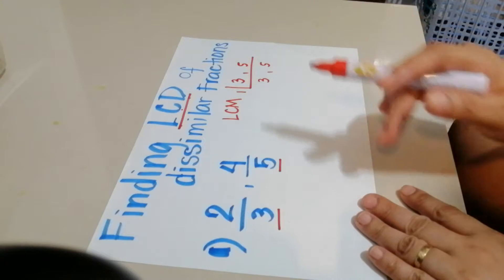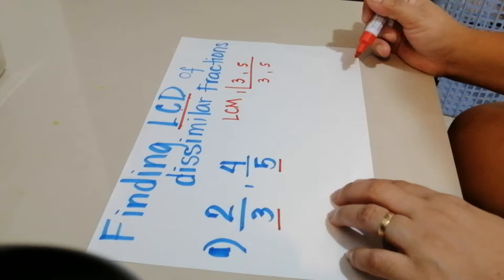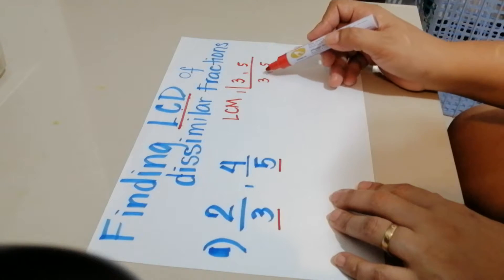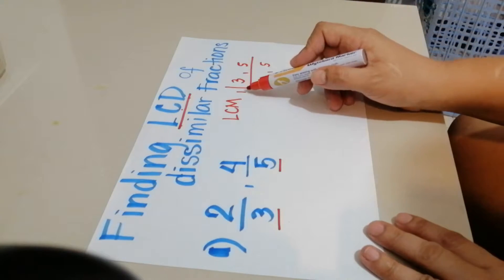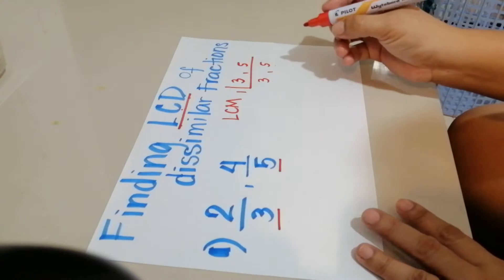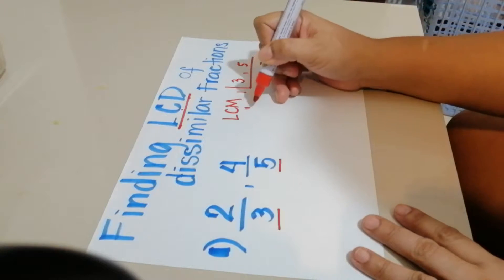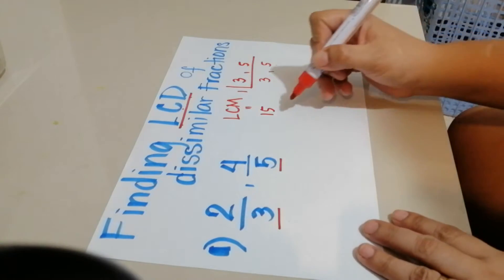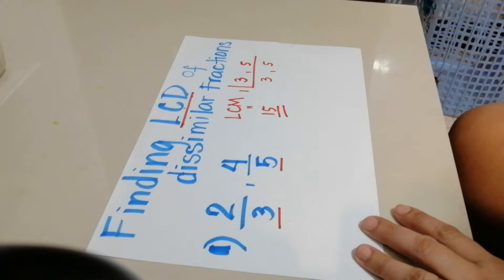Since 1 is the only common number that can divide them, that means 3 and 5 are prime numbers. Because of that, we can get the LCM by multiplying the numbers outside: 1 times 3 times 5, which is 15. So the LCM is 15. Since the LCM is equal to 15, that LCM is also known as the LCD, because we see it in the denominator.